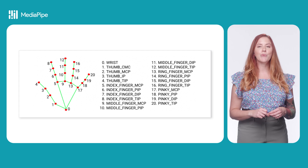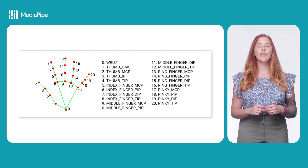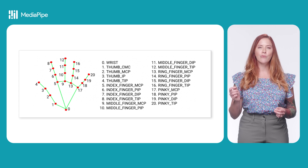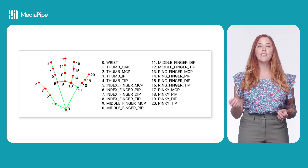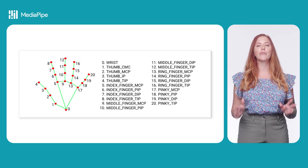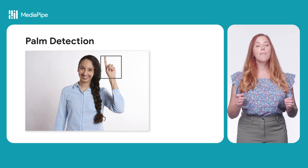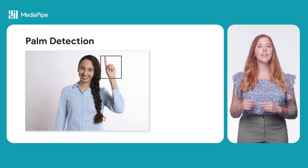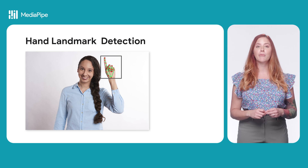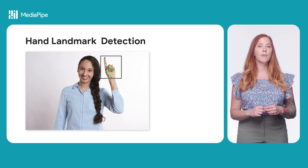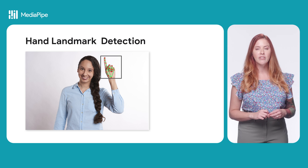This diagram shows you where the key points are. The model is trained on approximately 30,000 real-world images of hands, as well as several rendered synthetic hand models imposed over various backgrounds. The POM detection model locates hands within the input image, and the Hand Landmark Detection model identifies specific hand landmarks on the cropped hand image defined by the POM detection model.